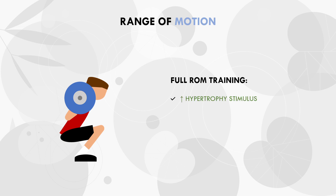Not only does full range of motion training result in superior muscle growth, it also likely minimizes fatigue, in particular joint stress. Lifting with a full range of motion usually requires lifters to use lighter loads compared with partial range training. This means that not only are we increasing muscle stress, we are also limiting joint loading. Using slightly lighter loads will limit overall joint and connective tissue stress, limiting our risk of injury over time. Therefore, in almost all cases, trainees should use full range of motion with all exercises.